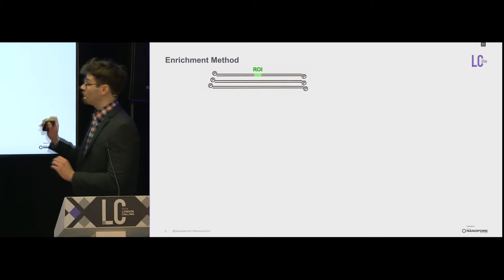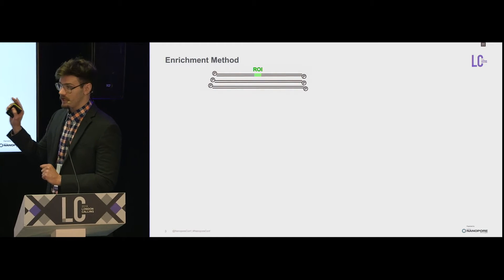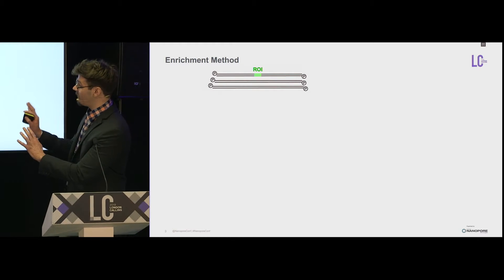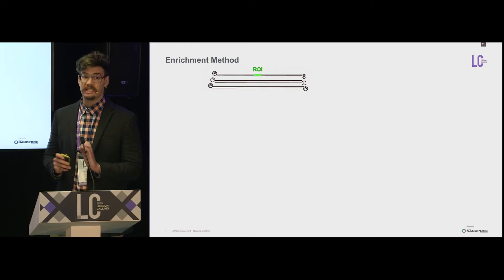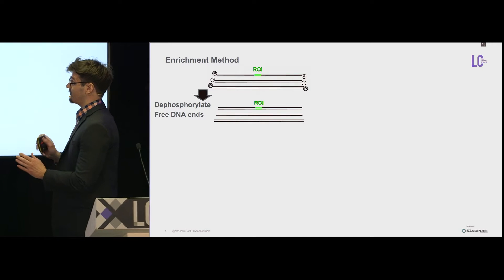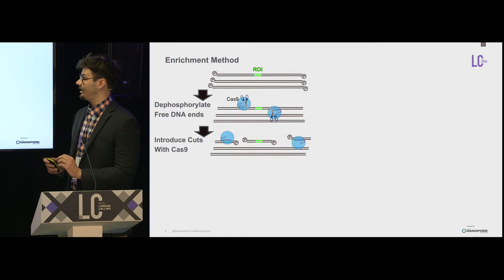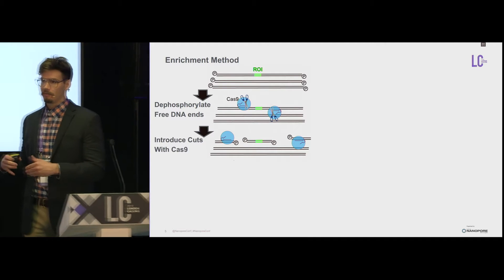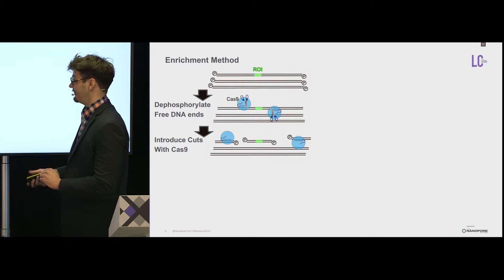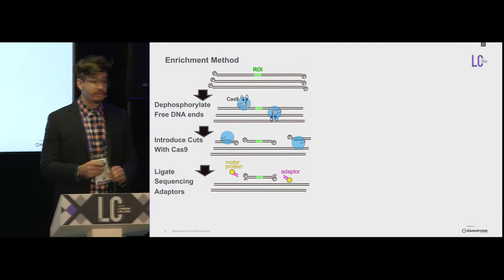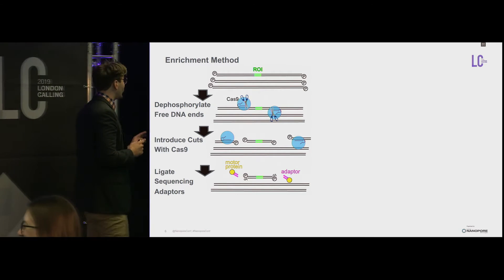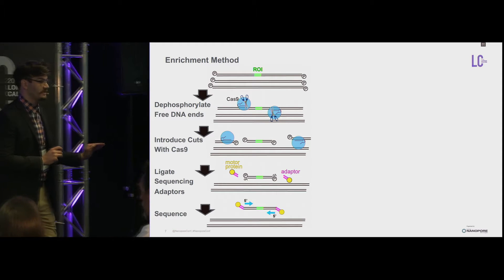If you have a region of interest — shown here as a little green ROI at the center in this soup of DNA molecules with some background DNA — the first thing we do is dephosphorylate all the free DNA ends so that we don't have any free five-prime phosphate sites. Then when we introduce a cut with Cas9, we should have a dramatic enrichment for free five-prime phosphate sites at the site of Cas9 cleavage, so that we can use these unique five-prime phosphate sites surrounding our region of interest to ligate our nanopore sequencing adapters prior to loading onto the nanopore sequencer.